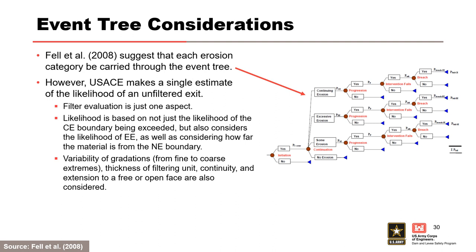Fell et al. 2008 suggested that each erosion category be carried through an event tree. However, USACE makes a single estimate of the likelihood of an unfiltered exit because filter evaluation is just one aspect of continuation. The likelihood of continuation of erosion is based on not just the likelihood of the continuing erosion boundary being exceeded, but also the likelihood of excessive erosion, how far the material is from the no erosion boundary, the variability of the gradations from fine to coarse extremes, the thickness of the filtering unit, upstream to downstream continuity, and extension to a free or open face.